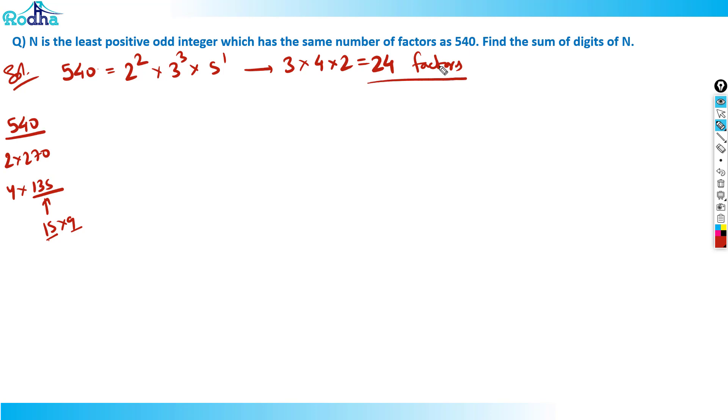So the question says that n is the least positive odd integer which has the same number of factors as 540. Same number of factors as 540, find the sum of digits of n. So there's an odd integer here which has got same number of factors as 540, that means 24 factors. So this question says that there's some odd integer actually which has got 24 factors. Which is that odd integer? I want to find the least positive odd integer, minimize that value.